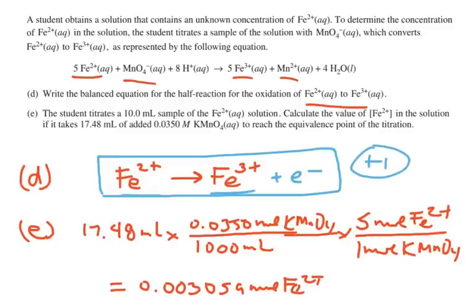Remember that electrons in the equation always are positive, add electrons. Don't subtract electron from Fe2+. That would not get you a point. Next it says, the student titrates a 10 milliliter sample of the Fe2+ solution. Calculate the value of the Fe2+ concentration in the solution if it takes 17.48 milliliters of the 0.0535 molar KMnO4 to reach the equivalence point.